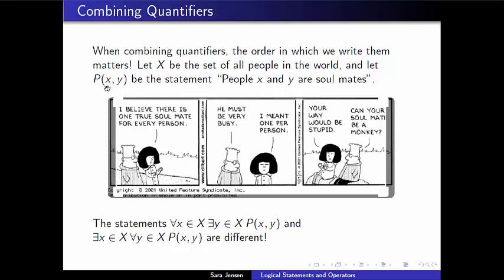Let's say instead of a single variable, I have a statement that takes input from two different variables, and I've called them X and Y here. So statement P(X,Y) is the statement that people X and Y are soulmates. In this cartoon, the character says, I believe there is one true soulmate for every person. And Dilbert says, he must be very busy. And she says, well, I really meant one per person. Your way would be stupid, right?